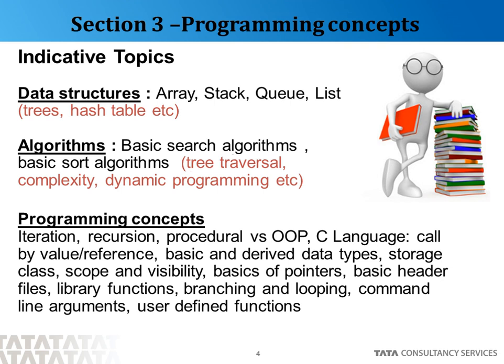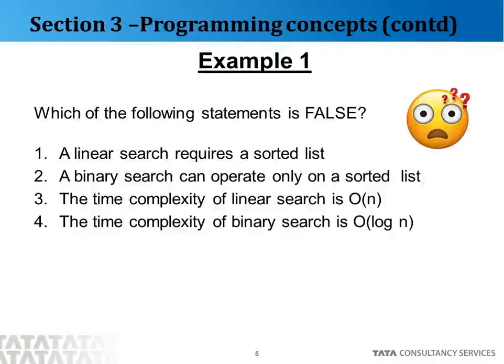Before we wind up this section, let's look at a couple of examples. Here is the first example: which of the following statements is false? You are given four options. Looking at it, we can say that the first one — linear search requires a sorted list — is false, because linear search goes through elements one by one and compares with the target value, so it does not require a sorted list. That is the false statement, so the answer is number one, and all other statements are correct.